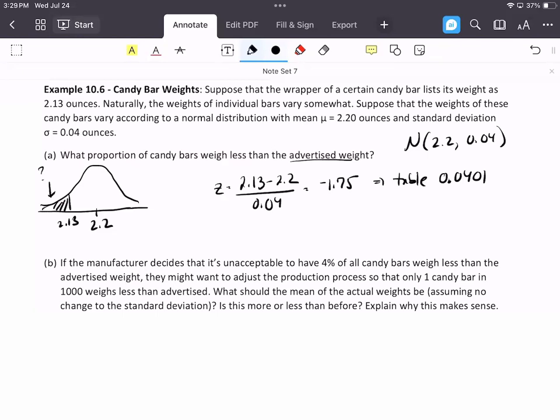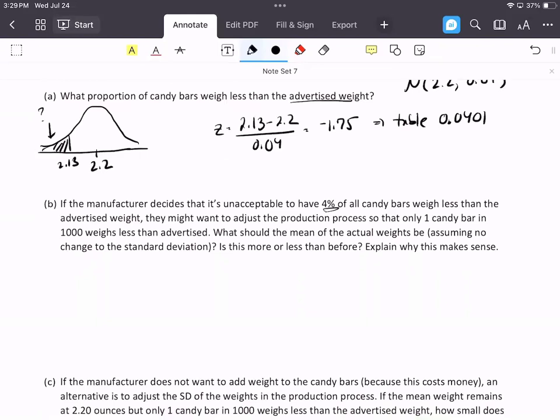If the manufacturer decides that 4% is unacceptable, they may want to adjust the production process. Obviously, if this was in real life, you would have to talk to the production team to make sure that it was even possible. But they want to adjust it so that only one candy bar in 1,000 weighs less than the advertised amount. What should the mean of the actual weights be, assuming that we don't change the standard deviation? Is this more or less than before? And explain why it makes sense.